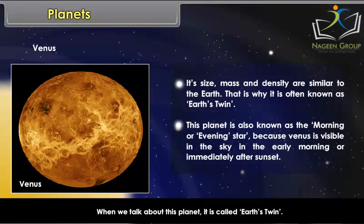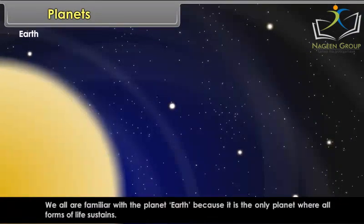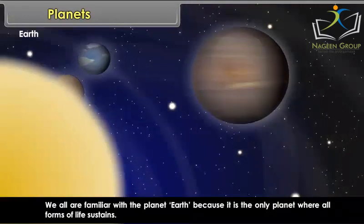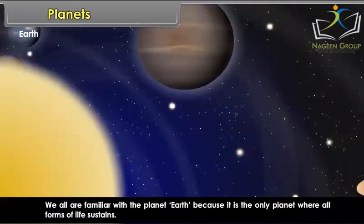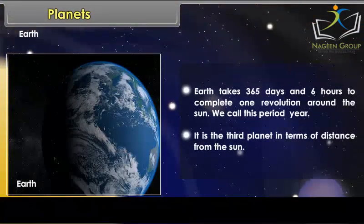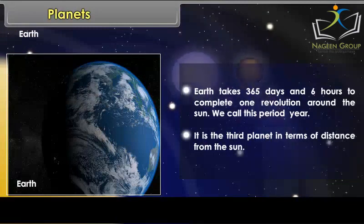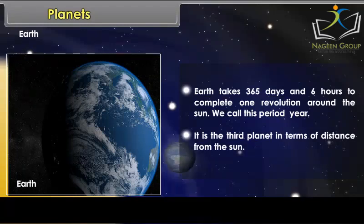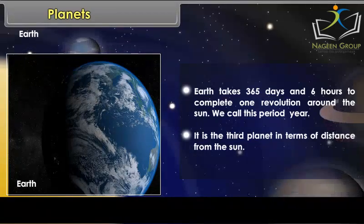Earth is the only planet where all forms of life sustain. Earth takes 365 days and 6 hours to complete one revolution around the Sun — we call this period a Year. It is the third planet in terms of distance from the Sun.